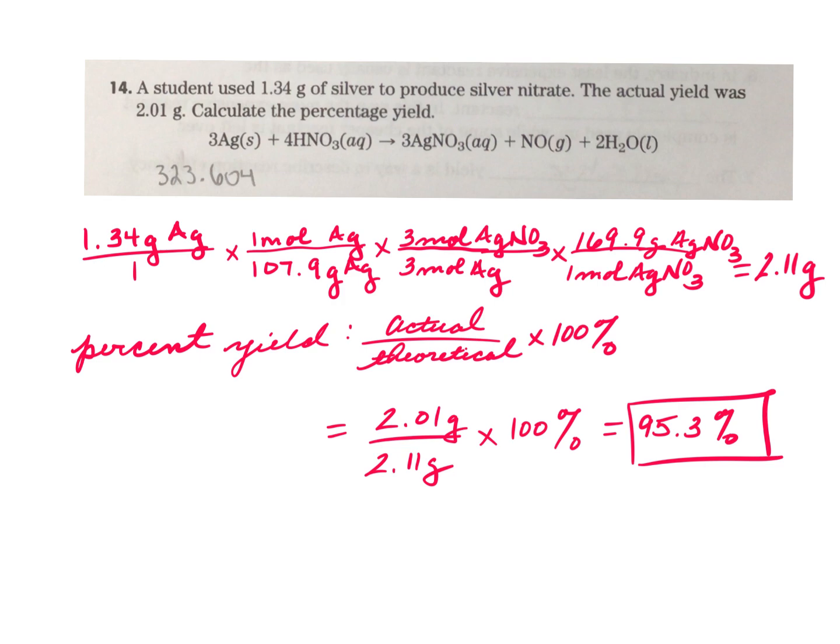But then to find the percent yield, that's not difficult at all. You just take the actual yield which they gave you in the problem was 2.01 grams and you divide that by the theoretical yield. That was what you had to calculate and that was 2.11. And then you multiply by 100 to convert that to a percentage. So when I did that, I think you can see my work there, I got 95.3 percent. So I hope that's good for number 14.